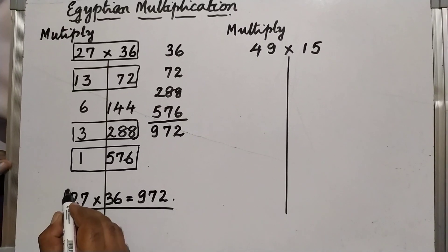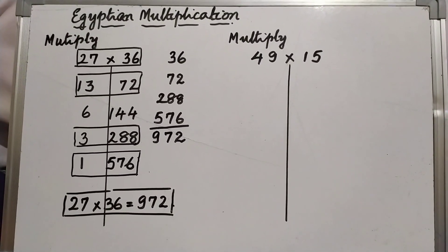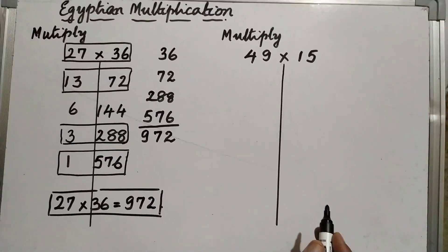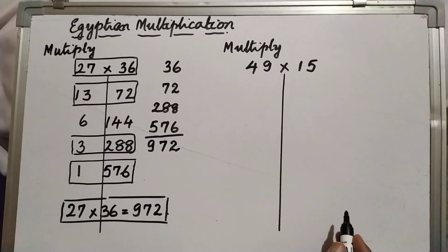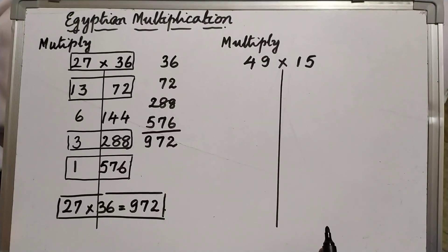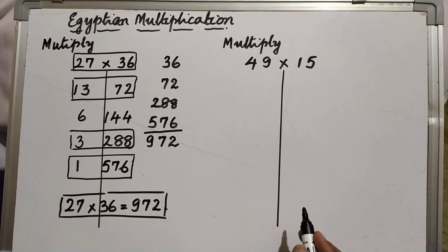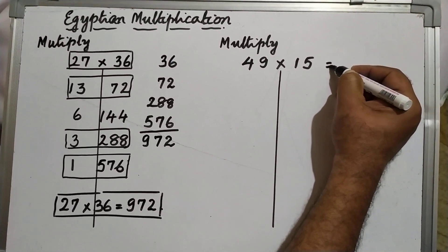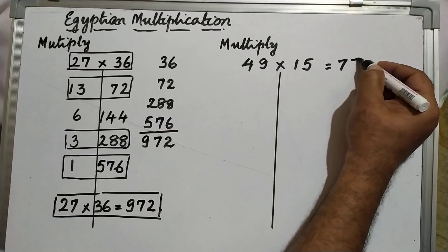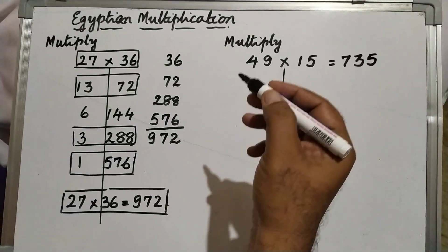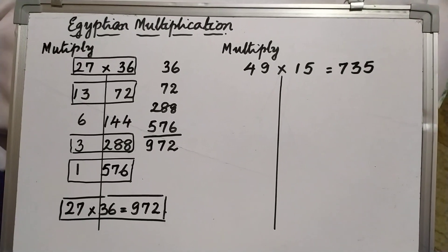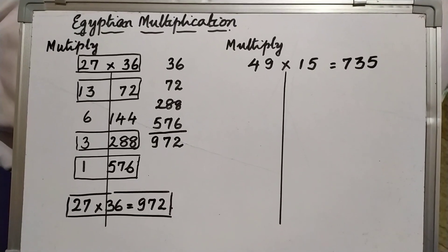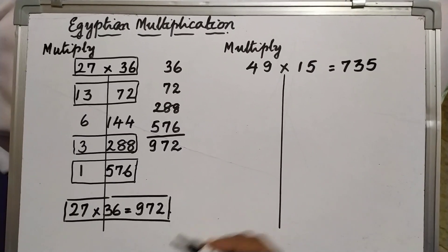Our ancestors were using this as one of the methods to multiply. We will take one more multiplication: 49 multiplied by 15. I will consider 49 as column number 1 and 15 as column number 2. If I multiply and actually find out, the answer is 735. Now we will use this Egyptian method — also called the Peasant's method, used by scribes — and verify whether the answer I got is correct.